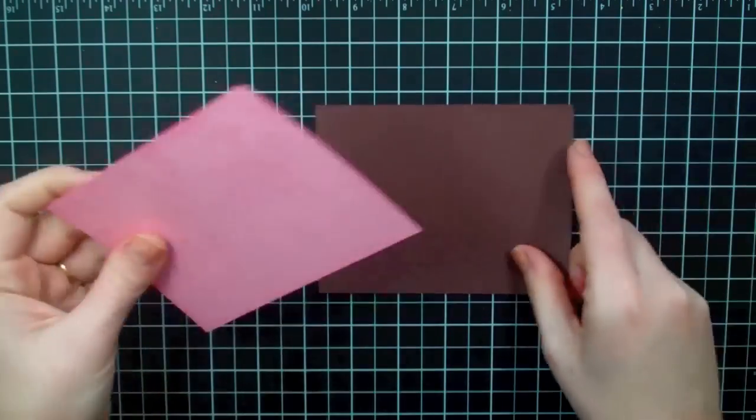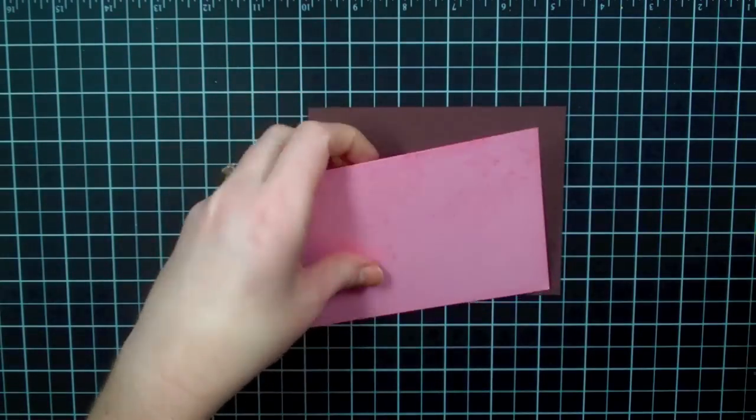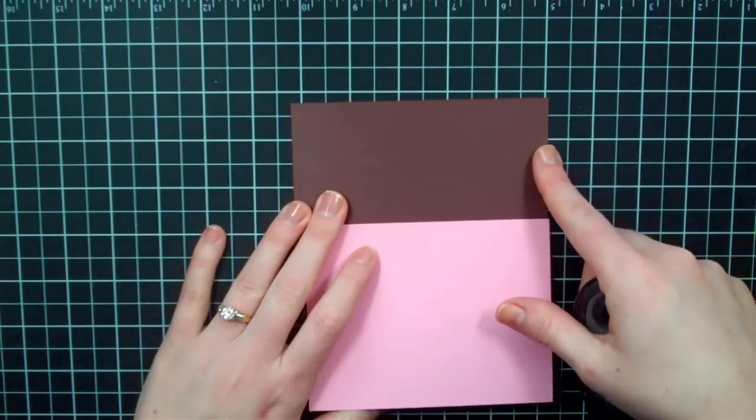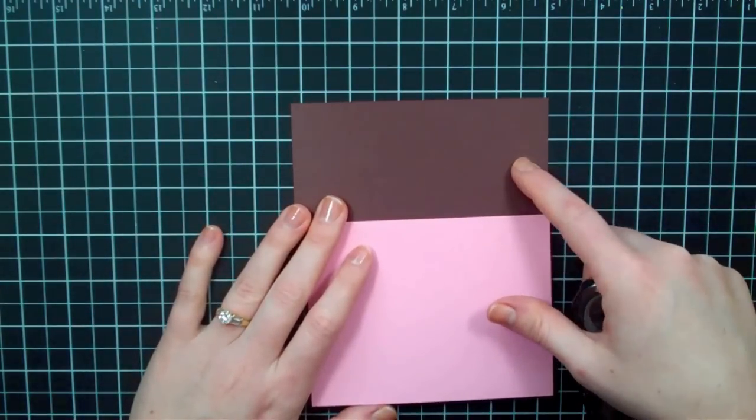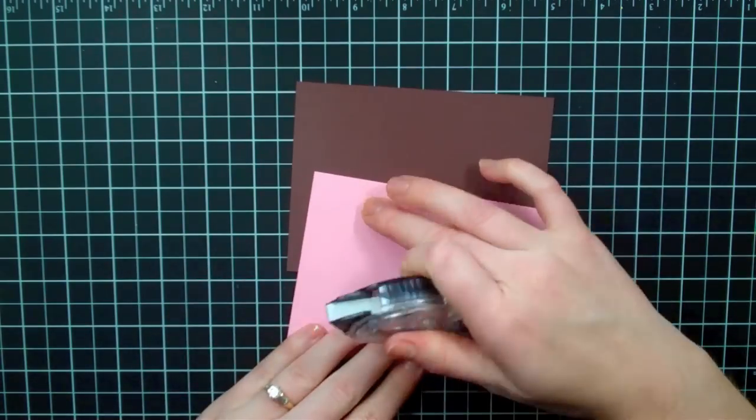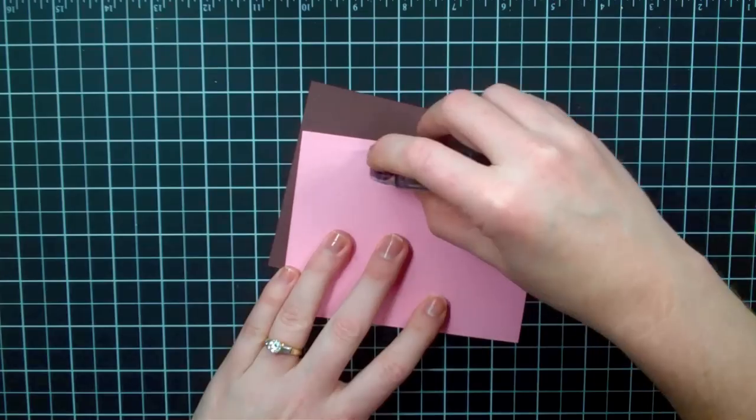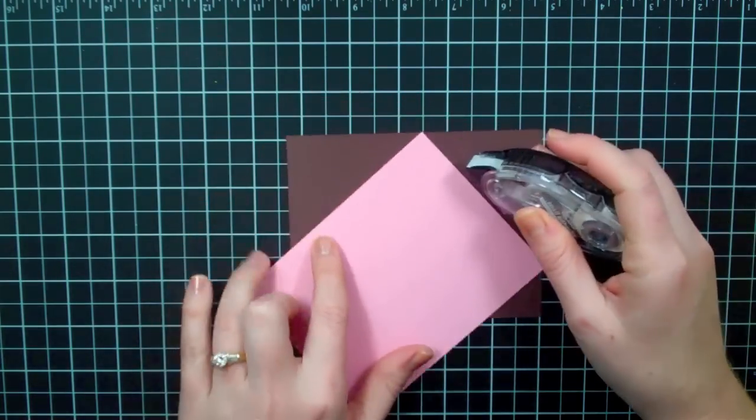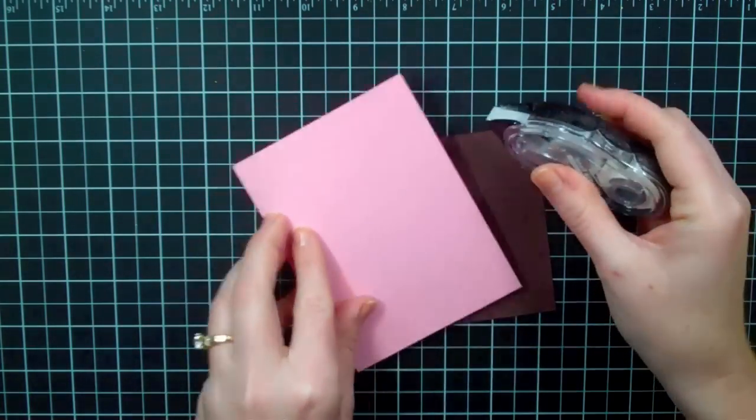And then I can just mat it on this piece of Chocolate Chip cardstock. Now this cardstock is cut at four by five and a quarter, this Chocolate Chip. And so this is then three and seven-eighths by five and one-eighth.